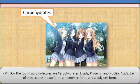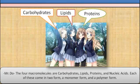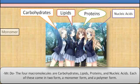The four macromolecules are carbohydrates, lipids, proteins, and nucleic acids. Each of these comes in two forms: a monomer form and a polymer form.